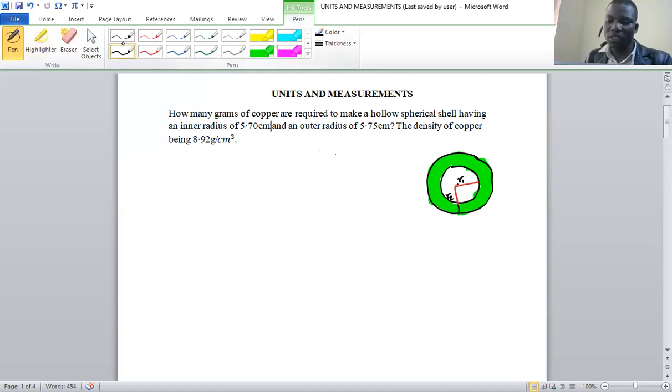So for us to be able to find the mass of that, we need to be able to find the volume of this green part of this hollow spherical shell. So how do we find the volume? We've been told that this is a spherical shell and the spheres have got their own formulas on how to find volume.